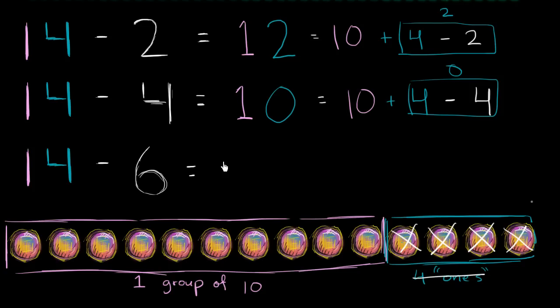Now let's do the last one. What is 14 minus 6? Well, we're going to take away 1, 2, 3, 4, and then 5 and 6. So now we've broken into our group of 10. This is going to be a one-digit number. And we are left with 1, 2, 3, 4, 5, 6, 7, 8. So this is going to be equal to 8. And we're all done.